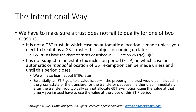However, you can still elect to treat a trust as a GST trust and have automatic allocation in the future. There's an extensive list of characteristics in code section 2632(c)(3)(B) which define a GST trust. In order to have automatic allocation of GST exemption, the trust has to be a GST trust. If it's not, then there's no indirect skip — but there still could be allocation of GST exemption with an additional step of electing in.